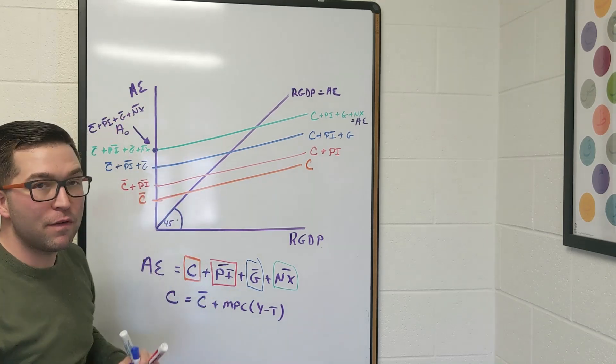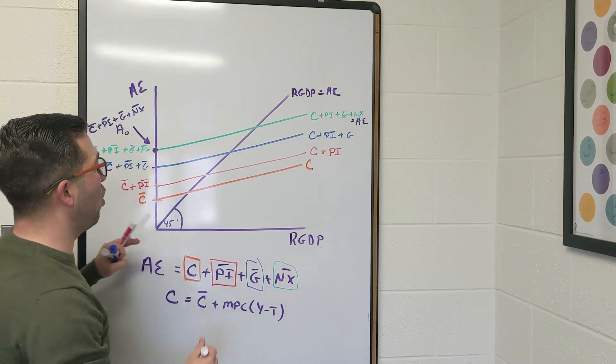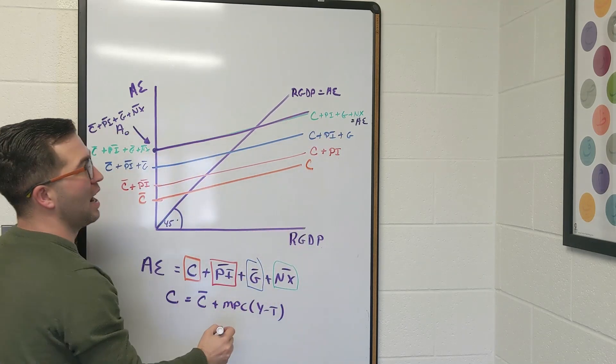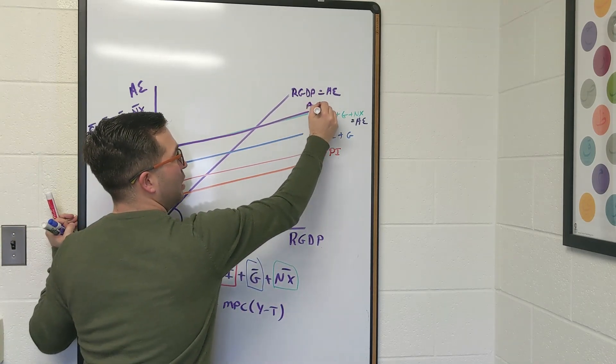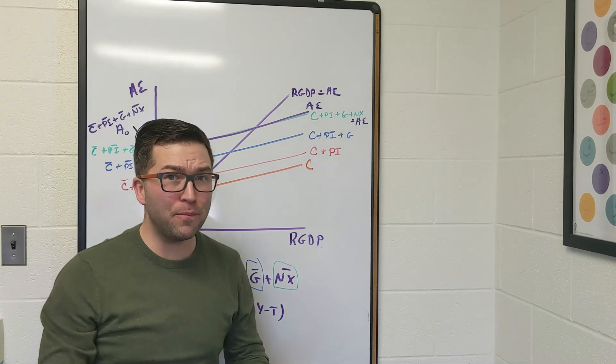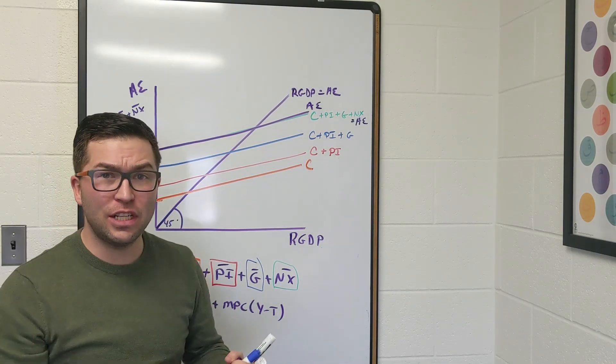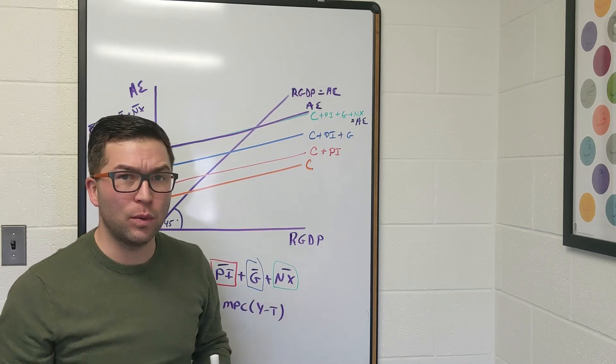Going forward, what we're going to do is we're only going to use this final line, which is aggregate expenditure, so that way we can identify the equilibrium. And we can also see that if we're out of equilibrium, how with the change in inventories do we move towards that equilibrium point.